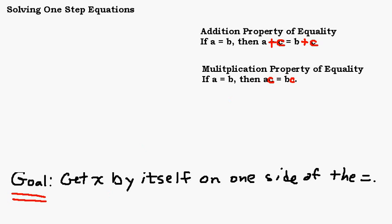Let's look at an example of when we'd have to use the multiplication property of equality. Let's do an easy one: 2x equals 8. In other words, 2 times what equals 8? Probably most of you, the answer just popped into your head: 4. We have to learn these techniques on easier equations so we can apply them to equations that are more difficult. You still need to learn this technique because we're going to do one where it won't just pop in your head.